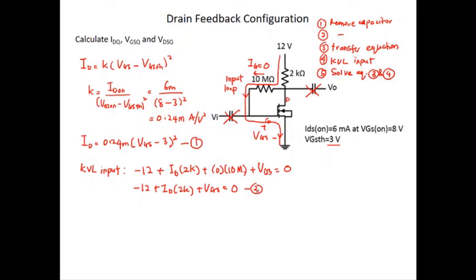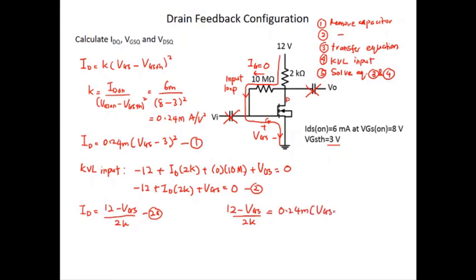For this case, let's solve it using the mathematical approach. I recommend solving for VGS first. To do that, rewrite equation 2 to define ID: ID = (12 − VGS) / 2K. This is equation 2A. Insert equation 2A into equation 1, and you get: (12 − VGS) / 2K = 0.24 mA × (VGS − 3)². Rearranging gives a quadratic equation with leading coefficient 0.48.